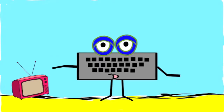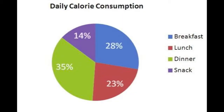Pie, or circle graphs, show data as part of a whole. In this example, we see that the person who created this graph eats most of their calories at dinner. Notice that on each slice of the graph, a percentage is represented. If you add up all of the percentages, they would equal 100%.